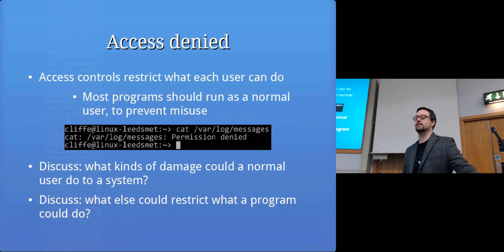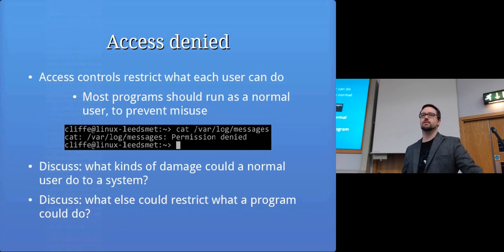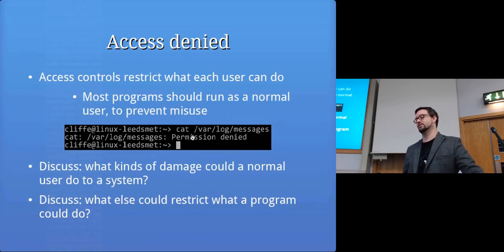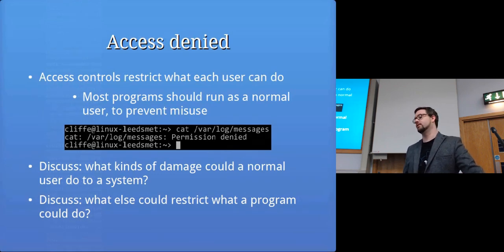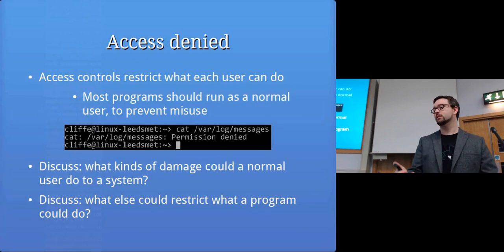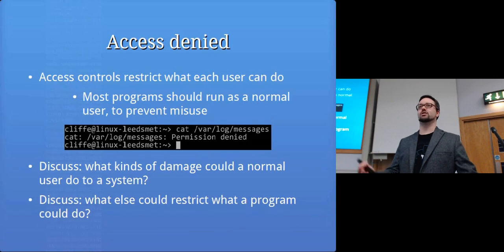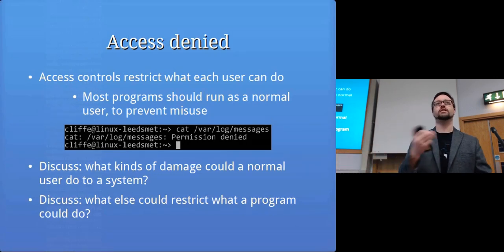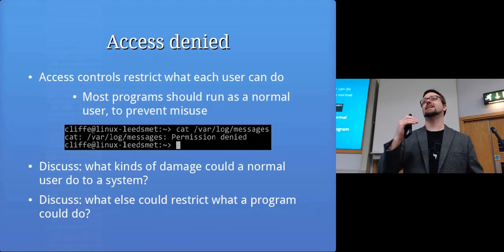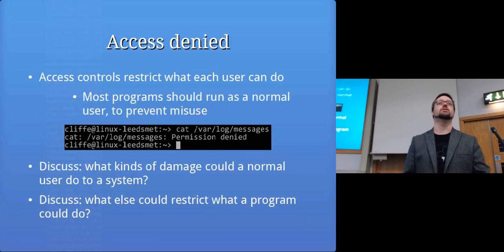Access control rules specify what that user is allowed to do on the system. If we're configuring a system to be secure, most users should run as a normal user and not as root. If I use 'cat' to print /var/log/messages it'll say 'permission denied' because the user 'cliff' doesn't get to do that — I need root-level access. So what if you hacked into someone's computer and got access not as an administrator, but just as their regular user account? What kind of damage could you do?